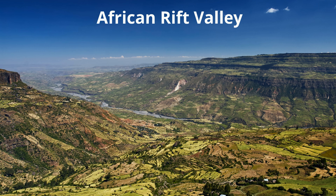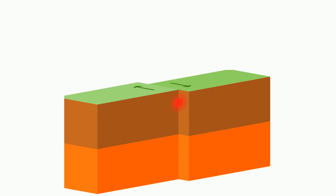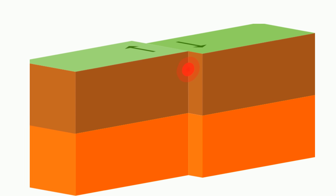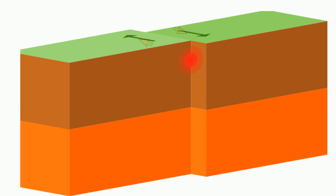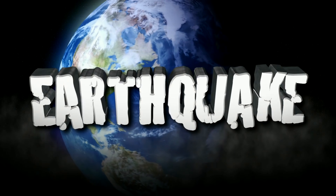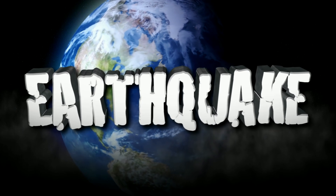Finally, transformed boundaries occur where two plates move past each other horizontally. When the plates move next to each other, they do not go along smoothly. Instead, they scrape against each other in a series of sudden slippages of crustal rock, and these can be felt as earthquakes.